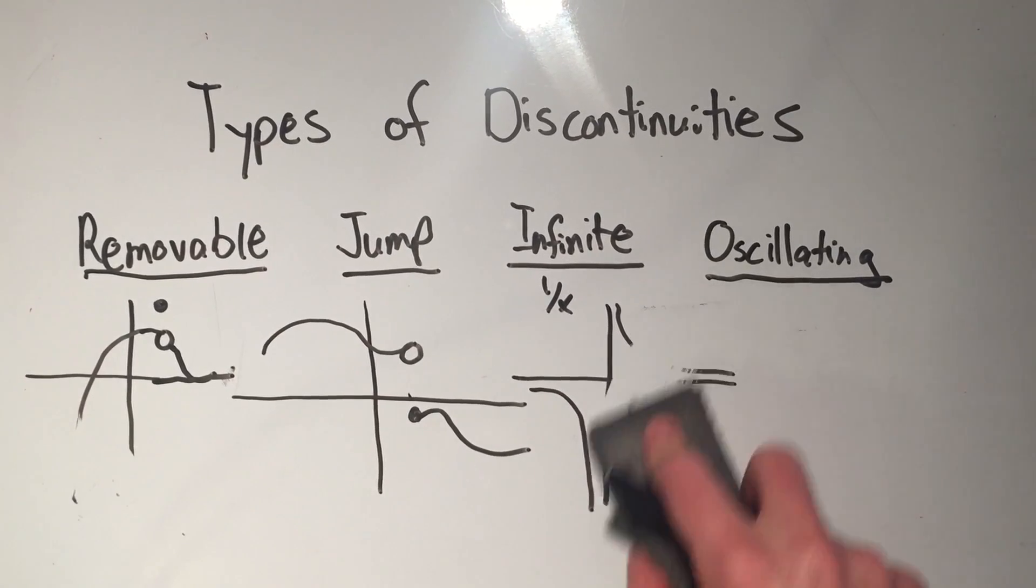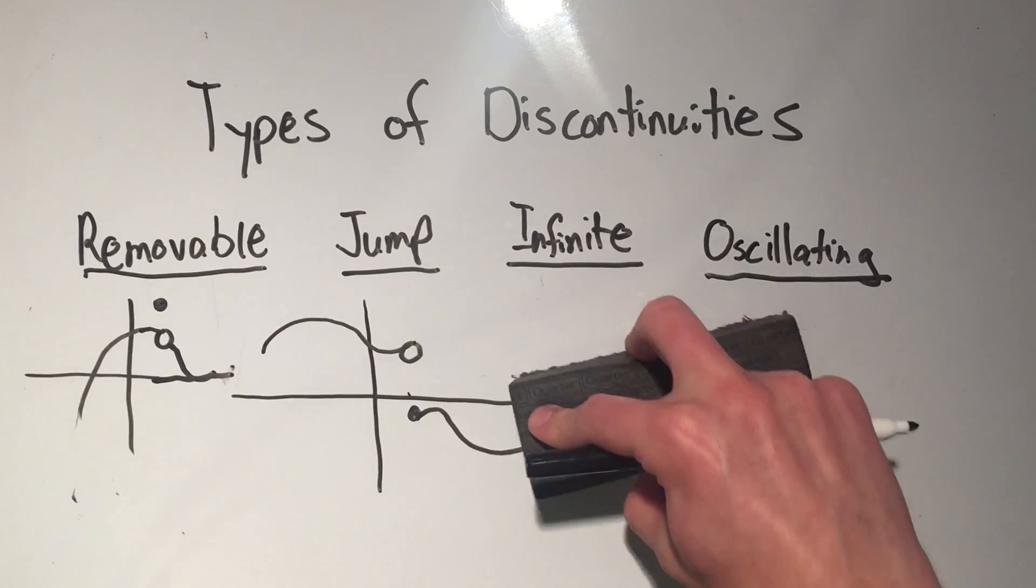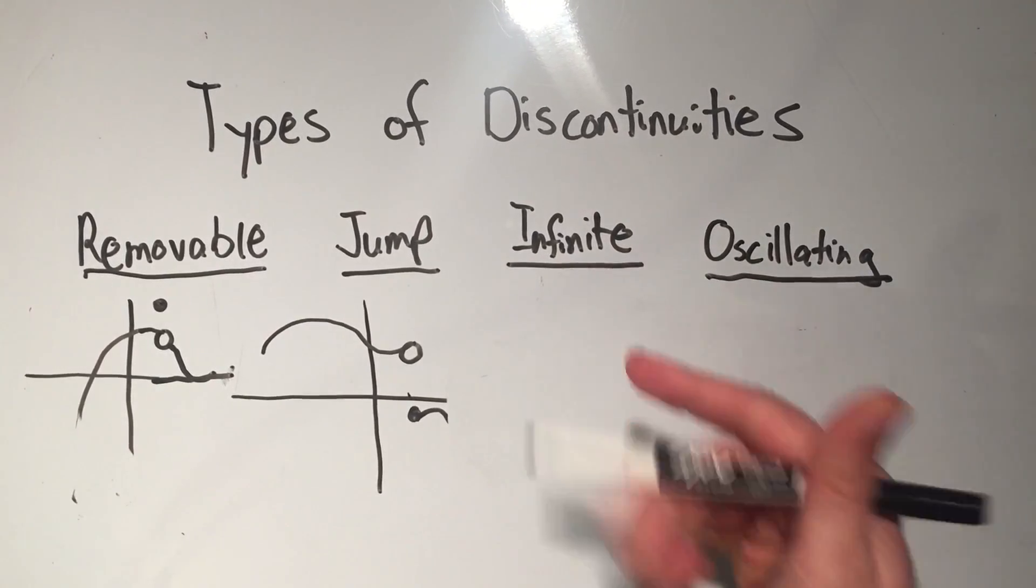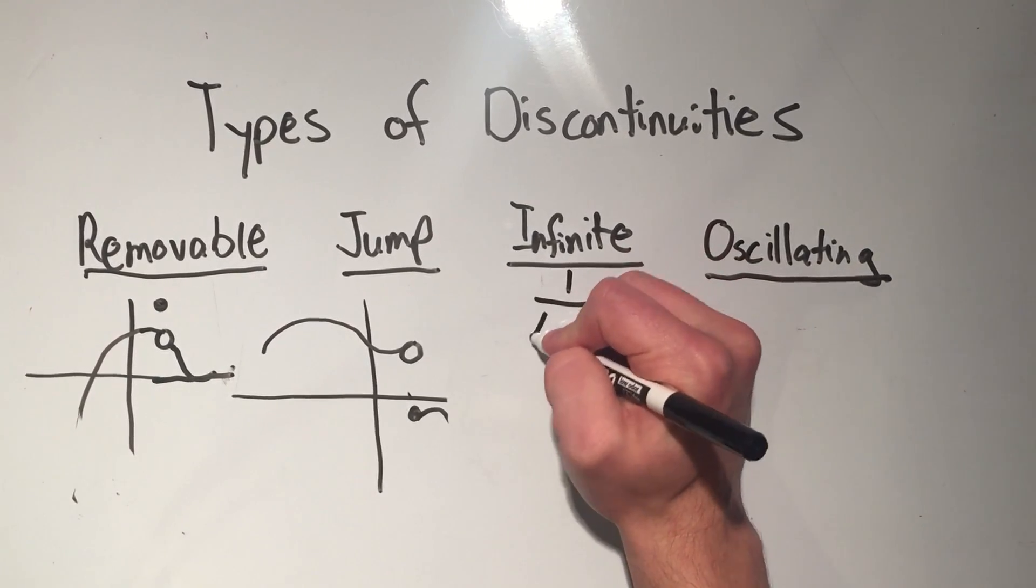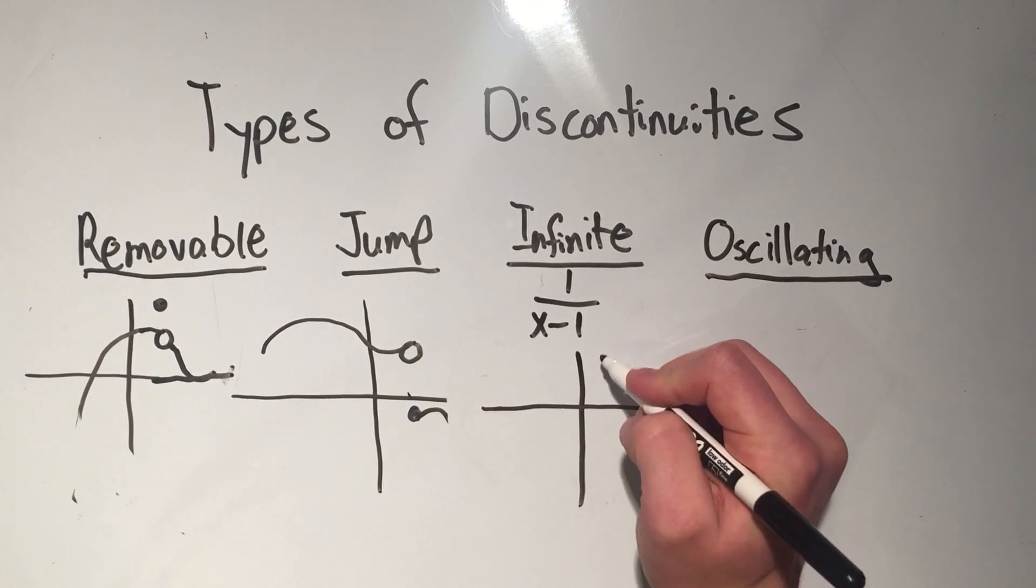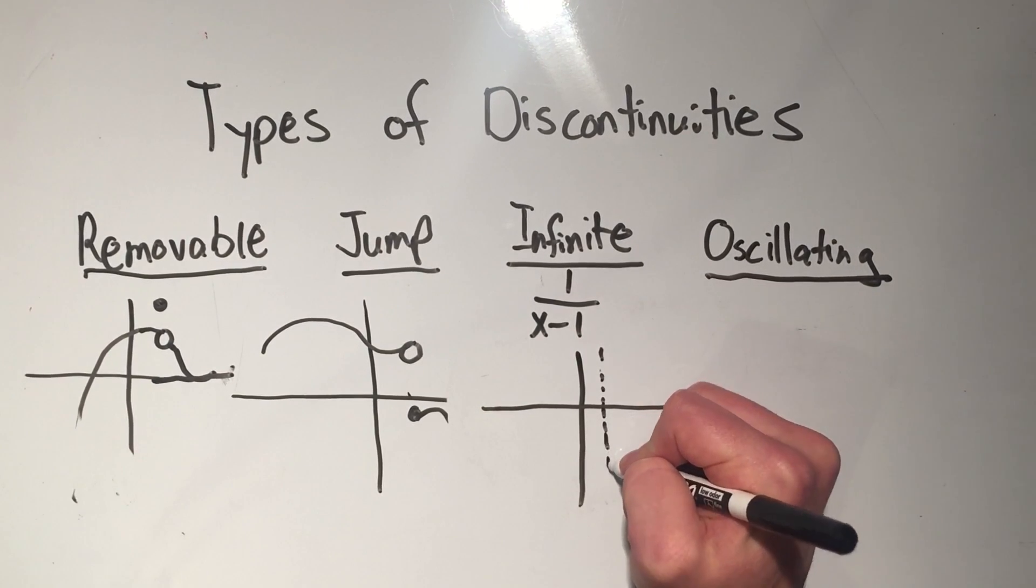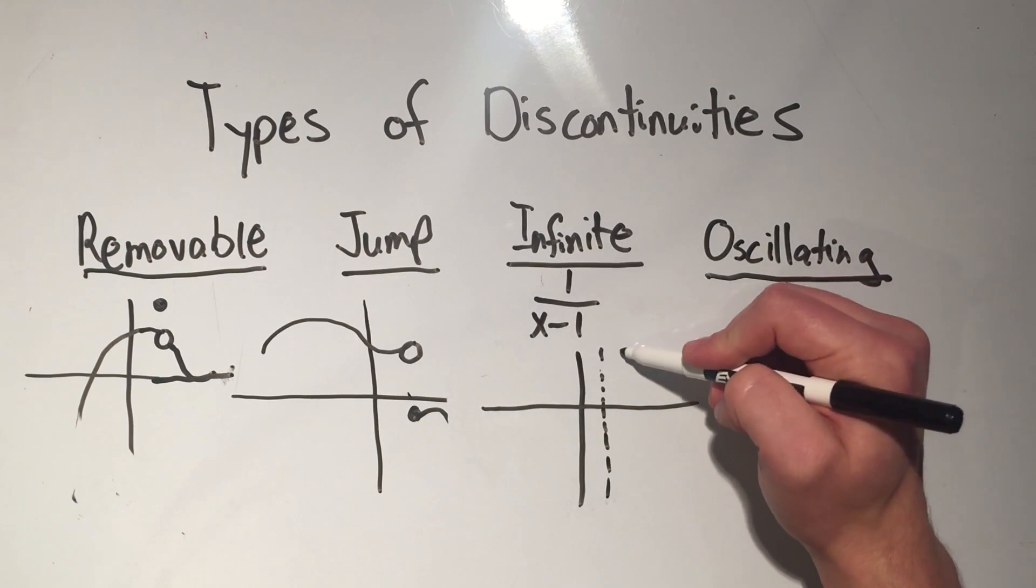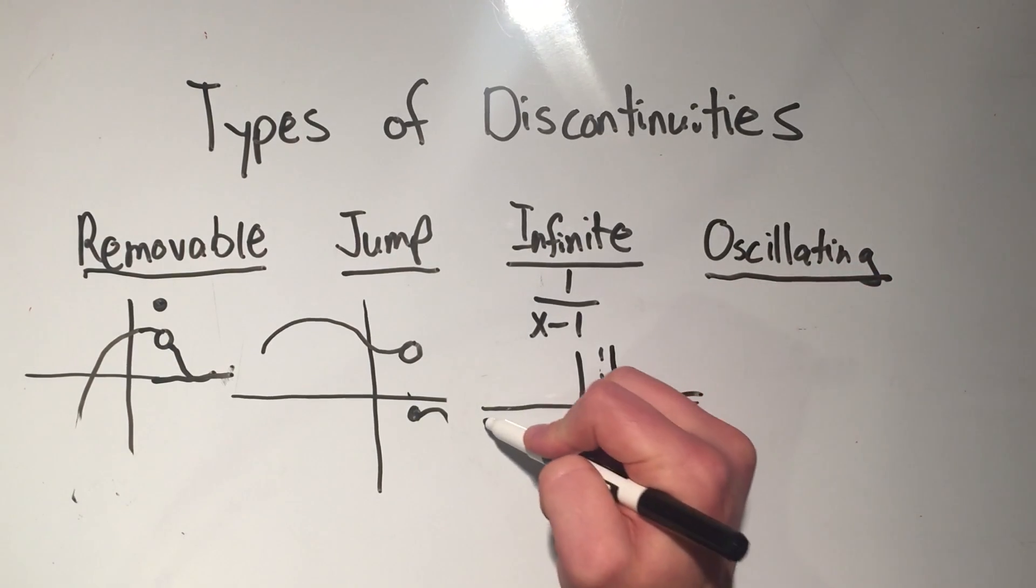Maybe I should draw a different one, just because that one's kind of hard to see. Let me draw 1 over x minus 1. That looks like this. Same function, just shifted to the right by 1. This has an asymptote at x equals 1.